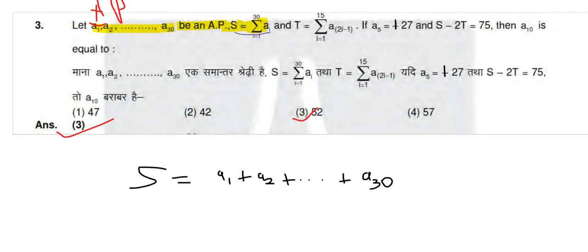The second thing that we have is T, which is the odd multiple of the given series. T is the odd multiple of the given series: a1, a3, a5, and so on. Now we have S minus 2T equals 75.